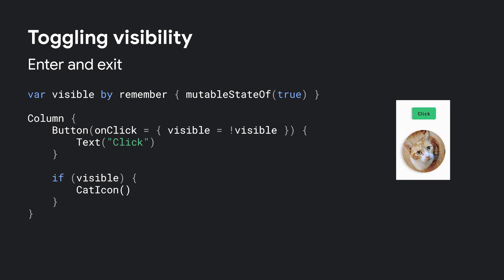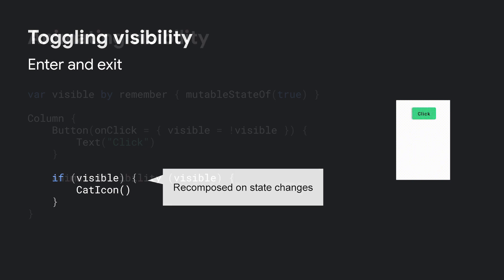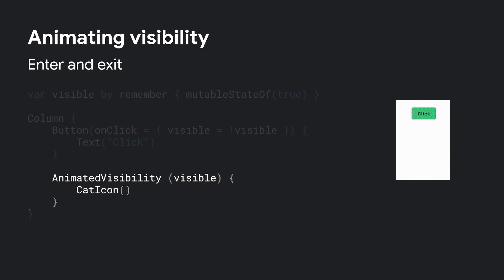Let's start with an easy example. Here we have a cat icon appearing and disappearing when we click the button. The visible variable is a Boolean state whose value is toggled every time the button is clicked. Any changes to the visible state invoke recomposition, and the cat icon either appears or disappears. If we want to animate this change, all we have to do is replace the if statement with the animatedVisibility composable. When the state value changes, the animatedVisibility composable runs an animation between the two states.